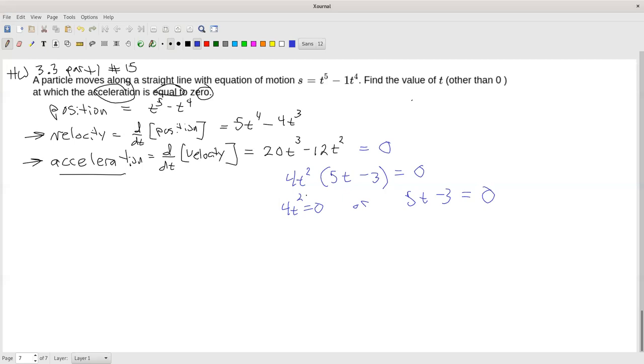If 4t squared equals 0, divide by 4. 0 divided by 4 is still 0. And the square root of 0, so t equals, take the square root of both sides, you get plus or minus the square root of 0, which is just 0. On the other side, we add 3 and then divide by 5, so t is 3 fifths.